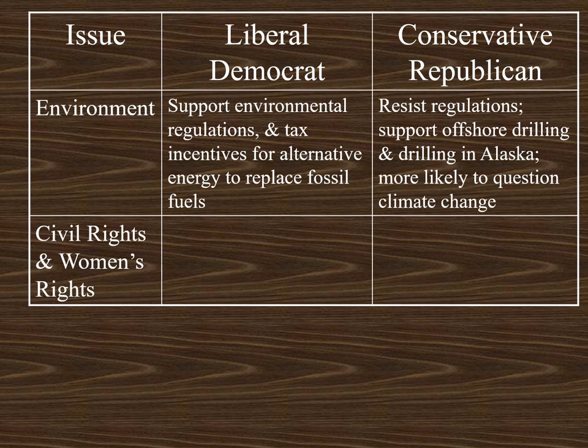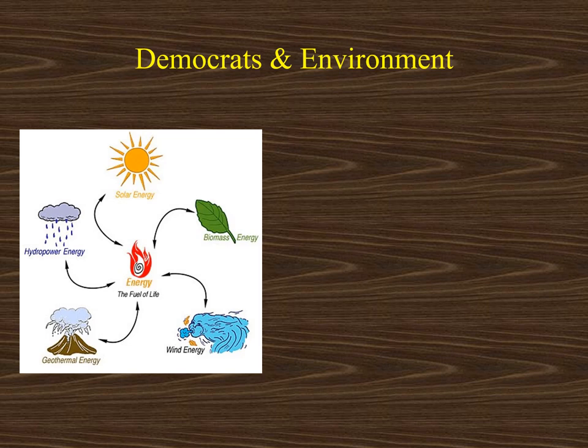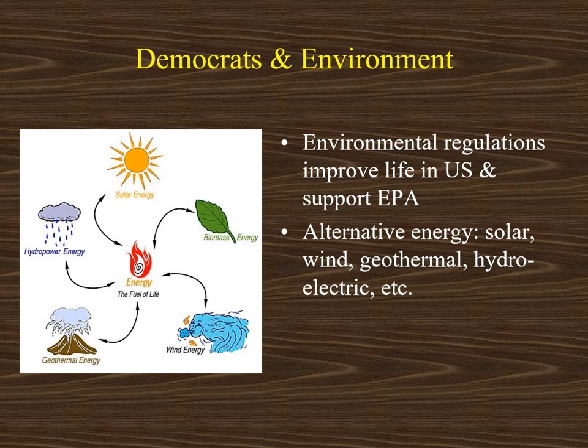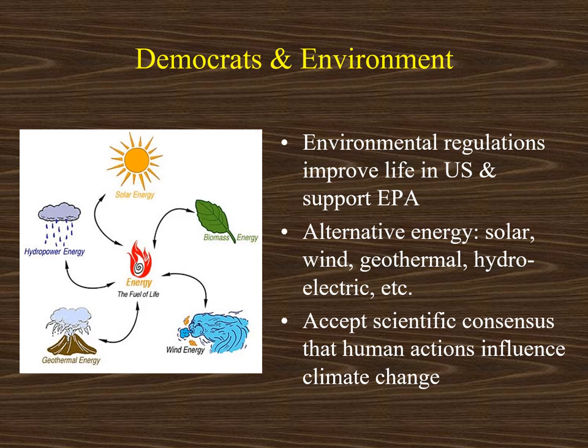Liberal Democrats would want the government to be more active to expand environmental regulations. They would support tax incentives to businesses that look to alternative energy to replace fossil fuels. Liberal Democrats would argue that things like the Clean Air Act and Clean Water Act improve life in the United States, and they would support the regulations of the Environmental Protection Agency. They would focus on alternative energy like solar, wind, and geothermal. Liberal Democrats are more likely to accept the scientific consensus that humans are impacting climate change.